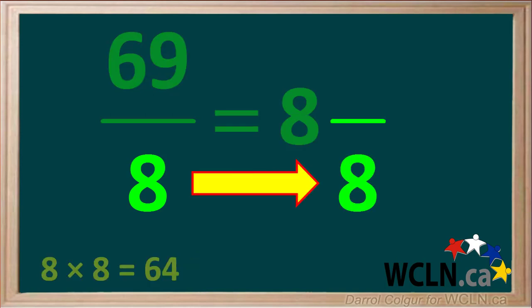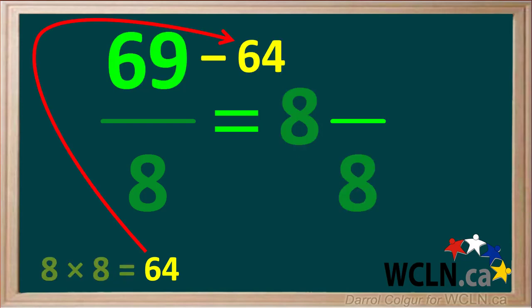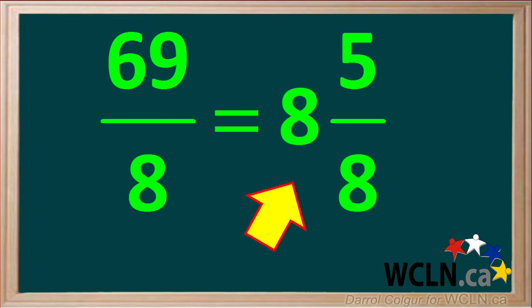Our mixed number will have a fraction whose denominator is 8. To find the numerator, we go 8 times 8 equals 64, and we subtract 64 from the numerator of the improper fraction, 69 in this case, which gives us 5. So our final answer is the mixed number 8 and 5 eighths.